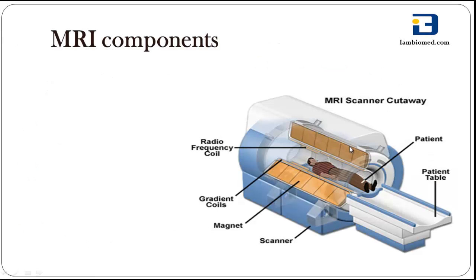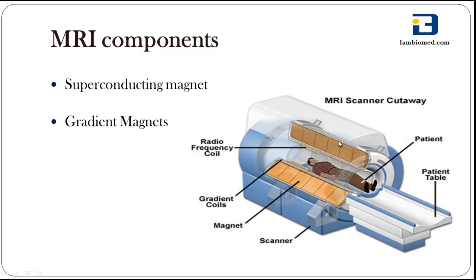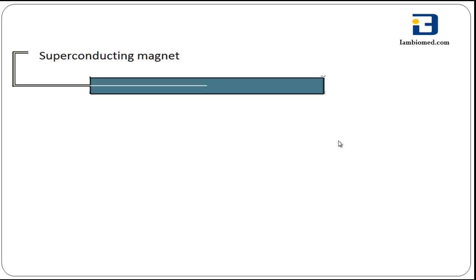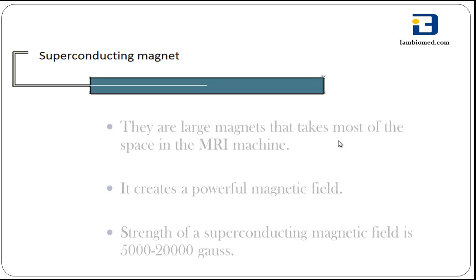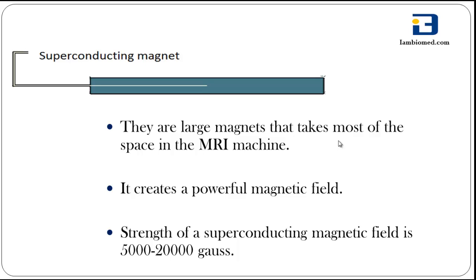The MRI components are the superconducting magnet, gradient magnets, coils, computer system, and patient table. The first is the superconducting magnet. Most MRI systems use a superconducting magnet which consists of many coils or windings of wire through which a current of electricity is passed, creating a field of up to 2 Tesla. It is a large magnet that takes most of the space in the MRI machine and creates a powerful magnetic field. The strength of the superconducting magnet is from 5000 to 20000 Gauss.